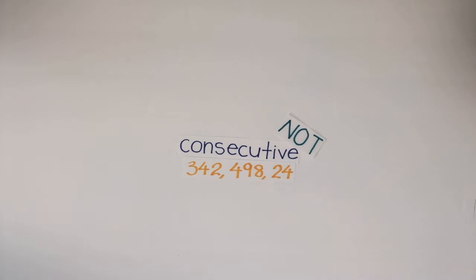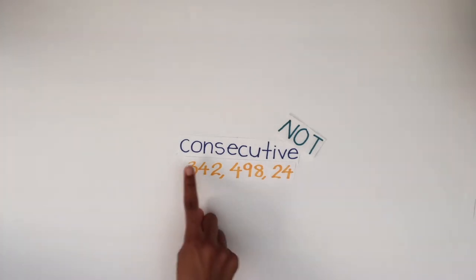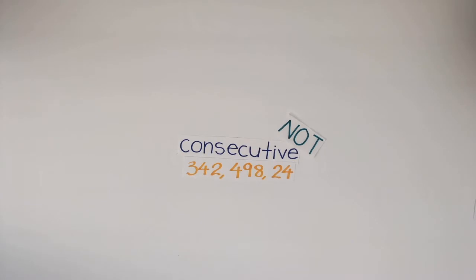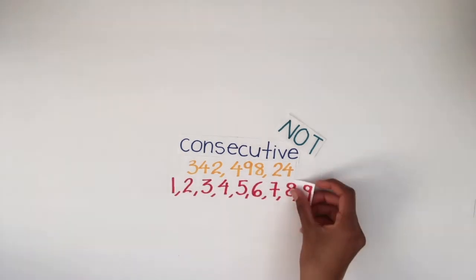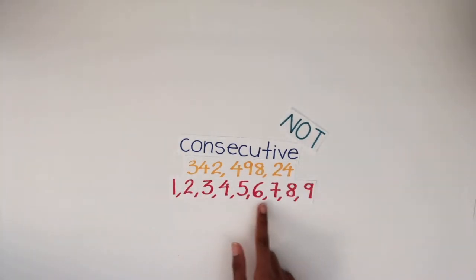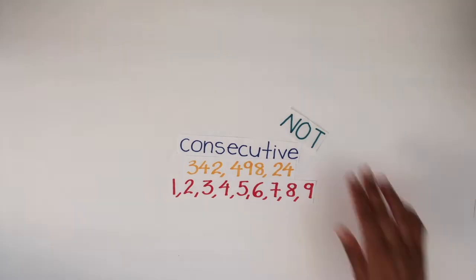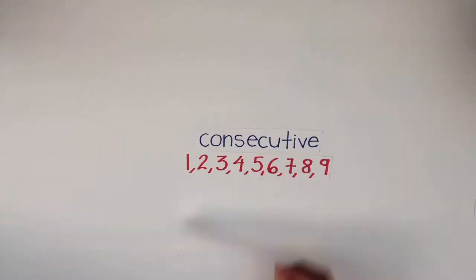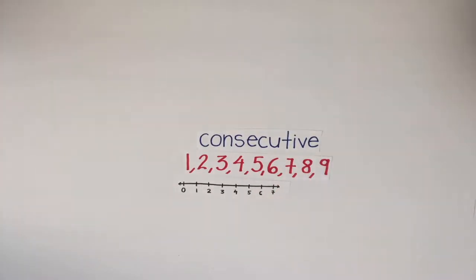Why? Well, the word consecutive comes from Latin origin. It means following closely, which makes sense because consecutive essentially refers to the successive or ordered sequence of numbers. You order the numbers from smallest to largest, the clearest example being the number line you are so familiar with.